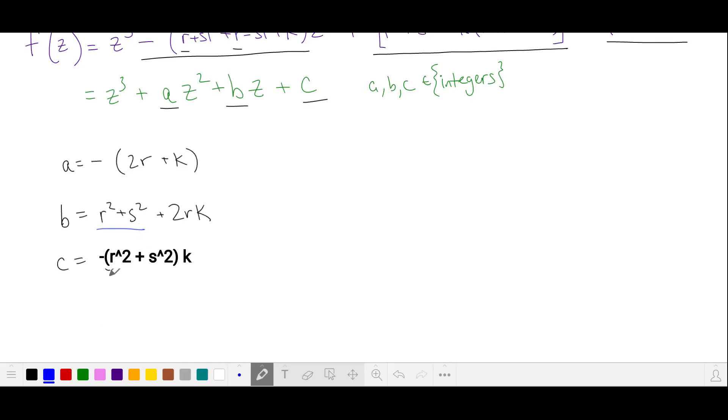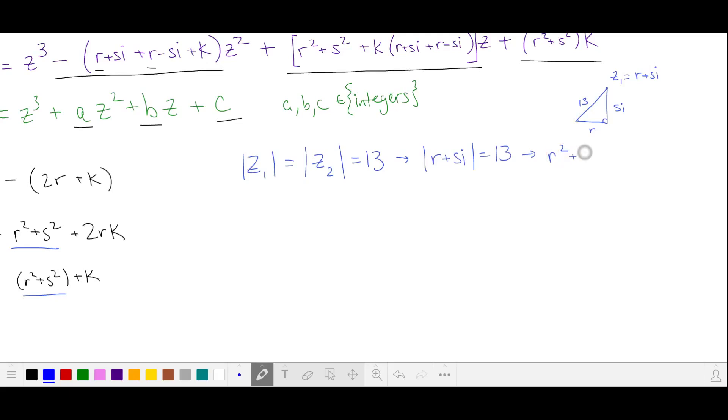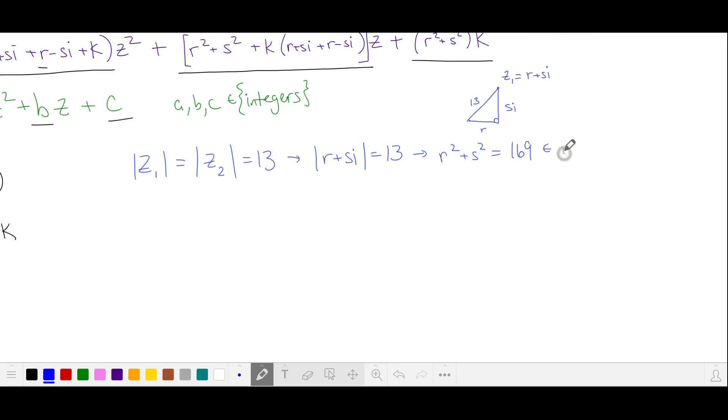r squared plus s squared appears twice in these equations. We want the magnitude of all three of our roots to be equal to either 13 or 20. If the magnitude of one of our complex roots is 13, then the conjugate also has a magnitude of 13. In terms of r and s, we have that r squared plus s squared is the square of 13, which importantly is an integer.